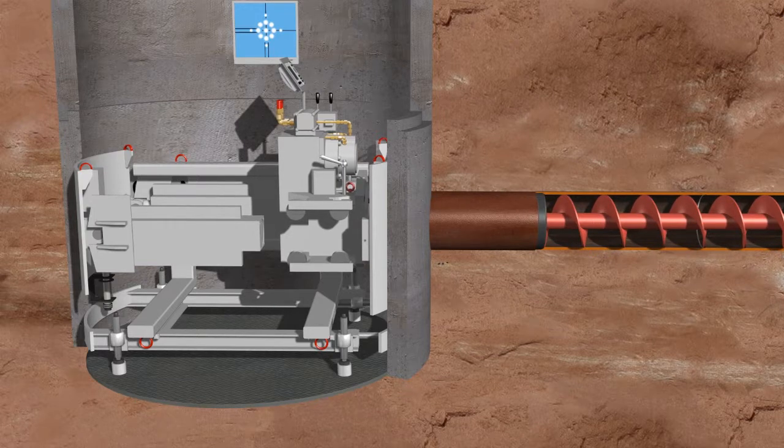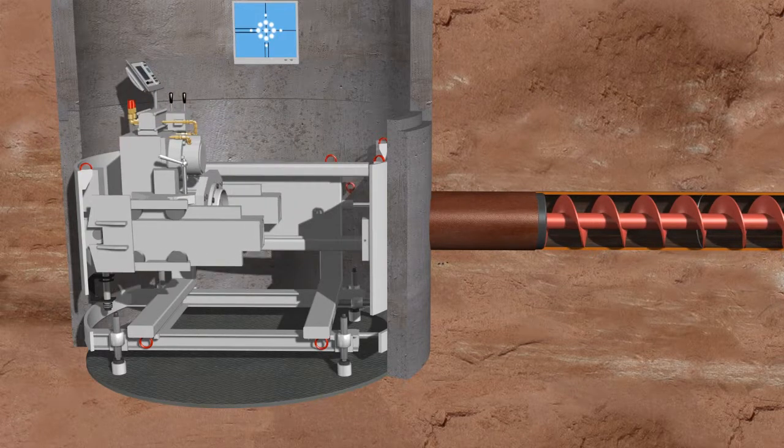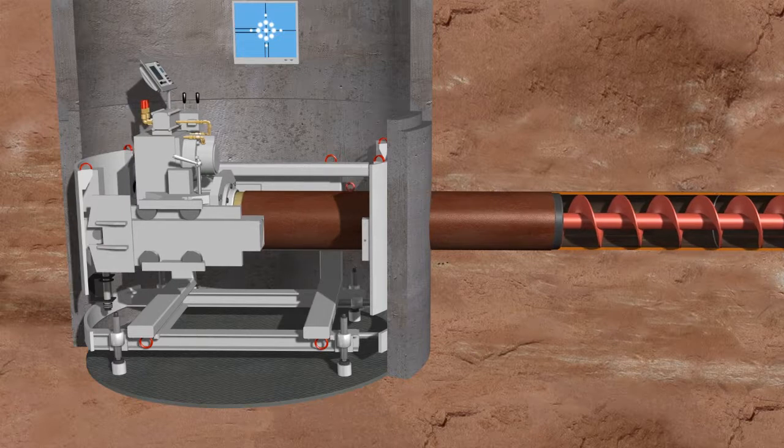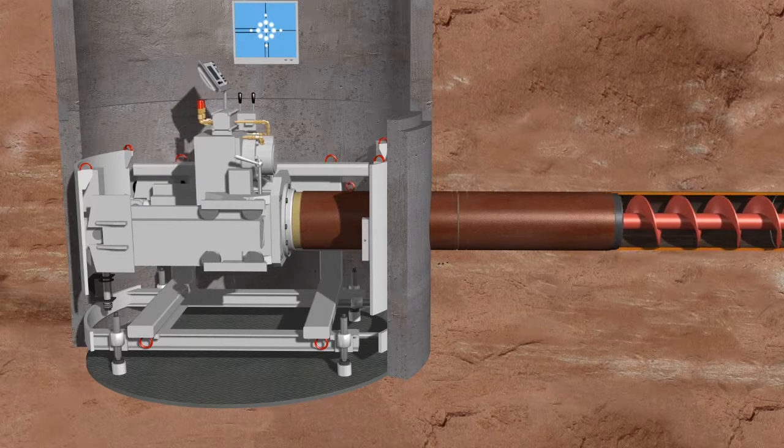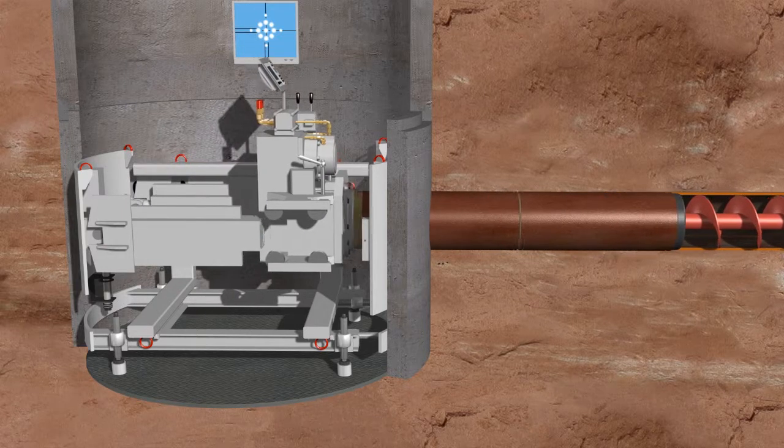During this operation, the jacking force only has to overcome the skin friction. As the product pipes are jacked into place, the augers and casing are disconnected and lifted out.